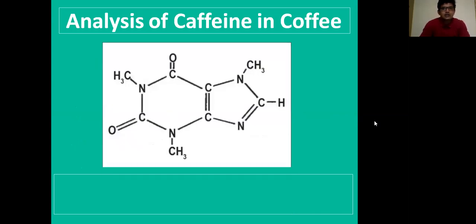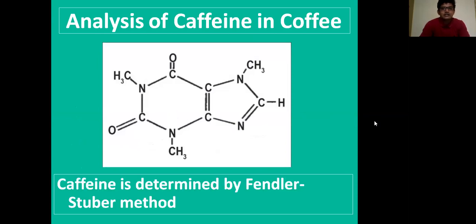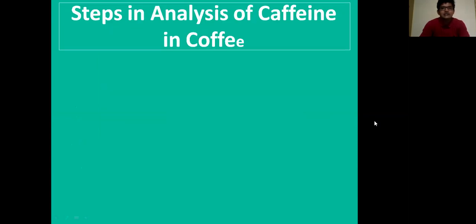This is the structure of caffeine which is present in coffee powder. Caffeine is determined by Fendler-Stuber method. Here are the detailed steps in analysis of caffeine in coffee.